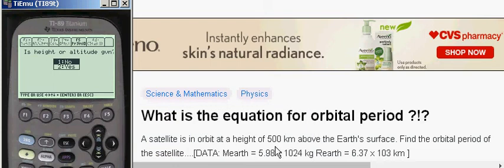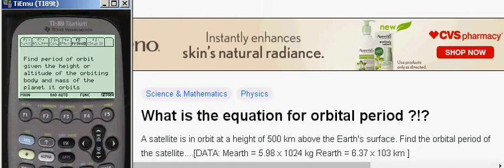And so they ask if there's a height or altitude given. Well, here's a height above the Earth. So we're going to choose number two, yes. We're going to find the period of the orbit given the height or altitude of the orbiting body and mass of the planet it orbits.